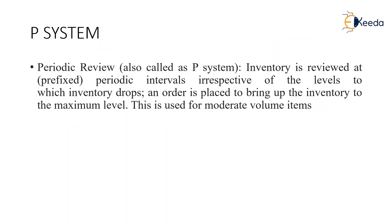So what is a Fixed Period System or a P-System? Periodic Review, also called as P-System, is one in which inventory is reviewed at periodic intervals or at regular intervals, irrespective of the levels with which inventory drops. An order is placed to bring up the inventory to the maximum level. This is used for moderate volume items.